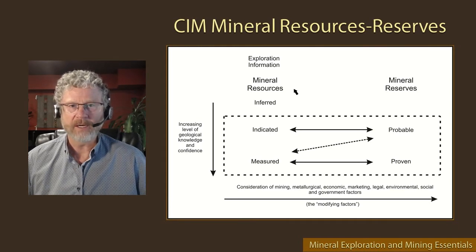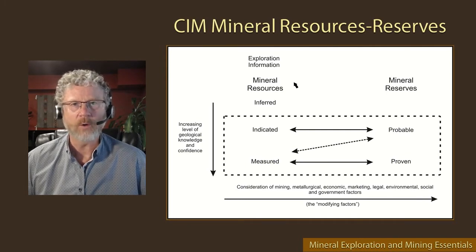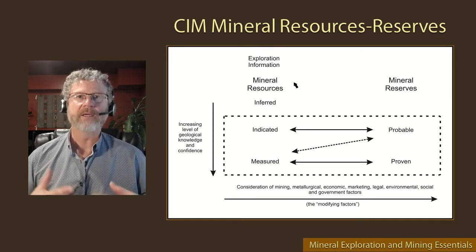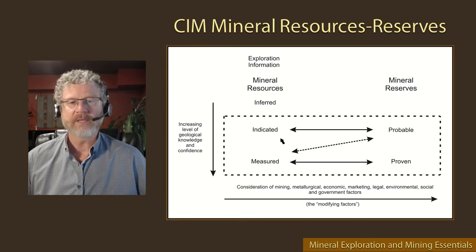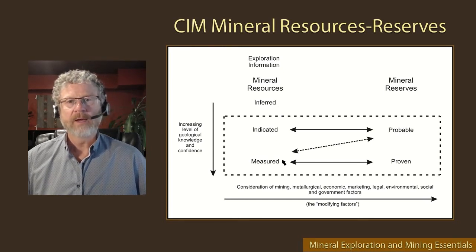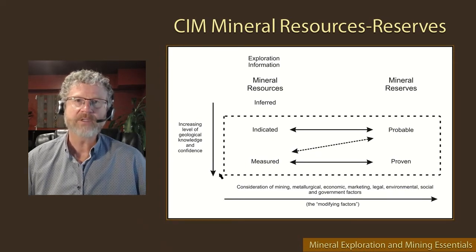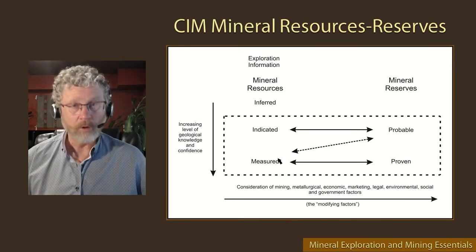A mineral resource is essentially a geological activity — you take all the drill hole information and assay data collected and determine a grade and tonnage for the deposit. Under mineral resources, there are three categories: inferred resources, indicated resources, and measured resources. The difference between them is shown on the left side of the chart with an arrow indicating increasing level of geological knowledge and confidence. As we go from inferred to indicated to measured, we have more geological information.